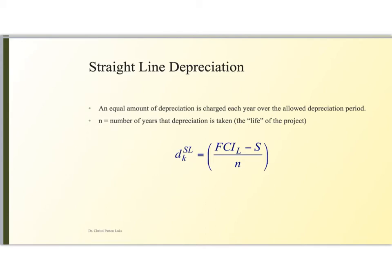So, straight line depreciation. Basically, what straight line depreciation says is that I'm going to depreciate the fixed capital investment without the land and then subtract off the salvage value. If I'm going to do this over, say, a five-year period, then I should just take that amount and divide it by five, and every year I will reduce my book value by that amount. So this is depreciation straight line — D for depreciation straight line — and this is for the kth year.